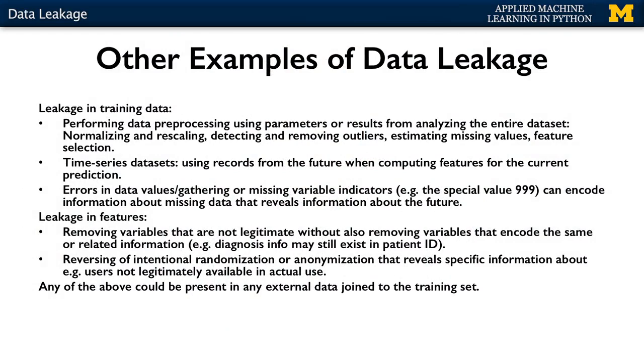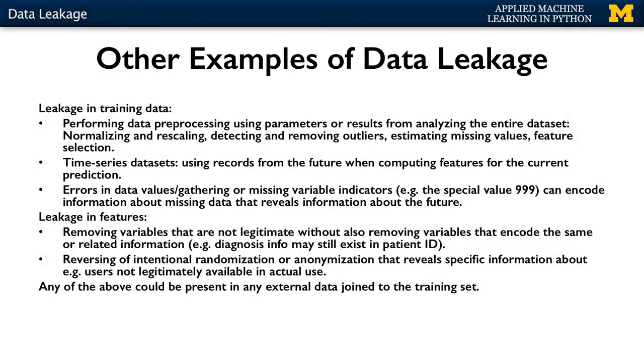Another critical need for caution occurs when working with time series data, where records for future events are accidentally used to compute features for a particular prediction. More subtle effects can occur if there are errors in data gathering or missing value indicators — if a feature relates to collecting at least one record in a time span, the presence of an error may give away information about the future, meaning no further observations are to be expected. Leakage in features also includes the case where we have a variable like diagnosis ID that we remove, but neglect to also remove proxy variables that contain the same or similar information, such as the patient ID whose number had clues about the nature of the diagnosis due to the admission process.